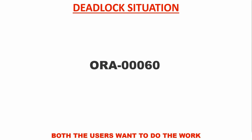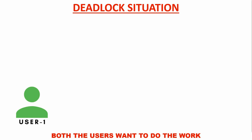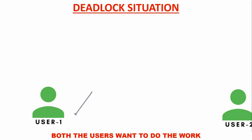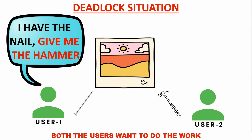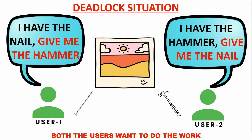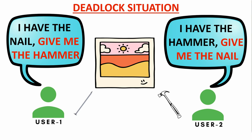Now secondly, what is a deadlock? A deadlock is a situation where two sessions are waiting on each other to release a lock on a common resource. Just imagine a real-life situation with two users: user 1 has the nail and user 2 has the hammer, and both of them want to hang a picture on the wall. User 1 wants the hammer that user 2 has, but user 2 wants the nail that user 1 has. If neither of the users give up, this situation will never end and the job to hang the picture on the wall will never complete. This is a real-life example of a deadlock.